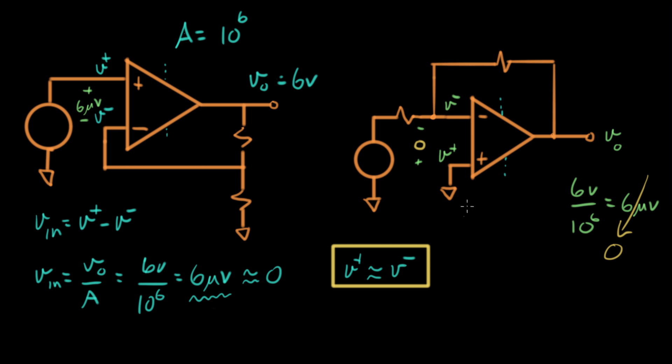So let's make a couple more observations. Right now it says right here, Vplus equals zero because it's grounded. So what does that mean Vminus is? Well, Vminus is also zero. So that point right there is at zero volts. So that's pretty cool. That point's at zero volts.